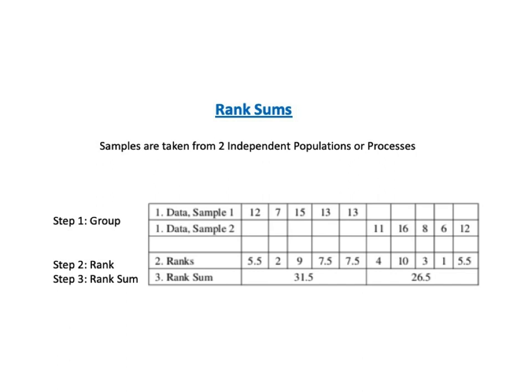Now let's take a look at rank sum tests. We are comparing samples taken from two independent populations or processes — that is, the data values of one population are not influenced by the data values of another. Step 1, Group: put all the data from both samples into a single group, but keep track of which ones came from which group. Step 2, Rank: rank the values in the combined group. Step 3, Rank sum: total the ranks for each sample.